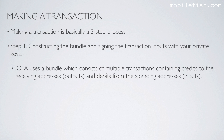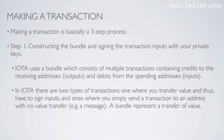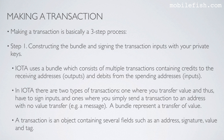IOTA uses a bundle which consists of multiple transactions containing credits to the receiving addresses, so-called outputs, and debits from the spending addresses, so-called inputs. In IOTA there are two types of transactions: one where you transfer value and thus have to sign inputs, and one where you simply send a transaction to an address with no value transfer, for example a message. A bundle represents a transfer of value. A transaction is an object containing several fields such as an address, signature, value, and tag.